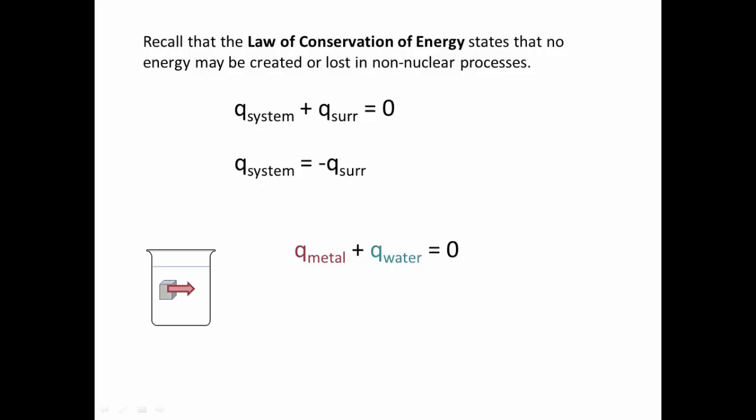All energy exiting the metal is going to be going into the water. And no energy is going to be coming from anywhere else, and no energy is going to be lost to anything. So all of our energy is in balance. When we rearrange this equation, we get that the Q of the metal is equal to the negative Q of the water. You could write it the other way, where the Q of the water is equal to the negative Q of the metal. It doesn't matter, it'll come out the same.